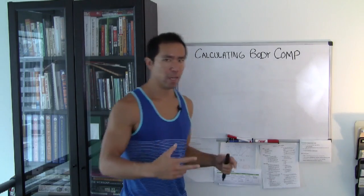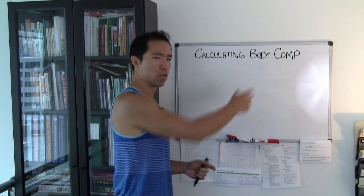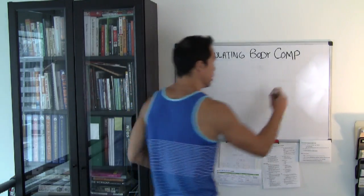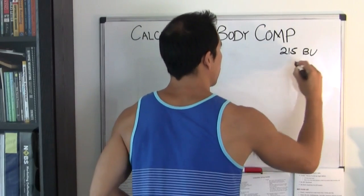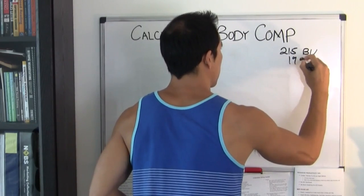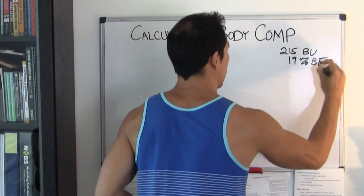Okay, so we're going to start off by writing down all the variables that we know about, just over on the right so we can keep track of them here. So 215 is your body weight and 19% body fat currently.